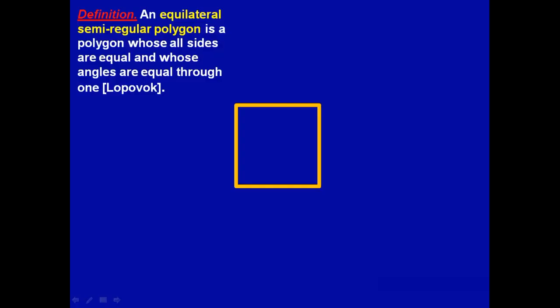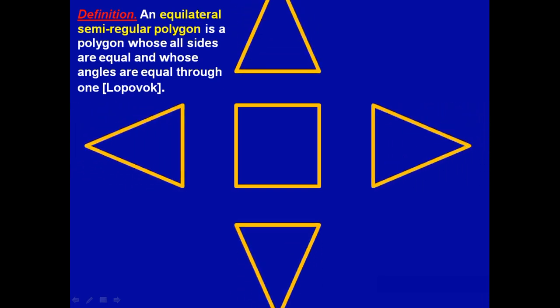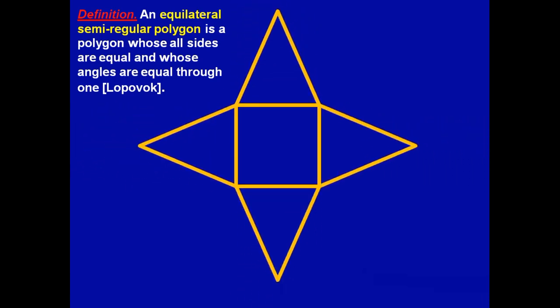During the work we used different geometric objects. Here are their definitions. First, an equilateral semi-regular polygon. Imagine that we have a square and add isosceles triangles to each side. Then the polygon will have equal sides and its angles will be equal through one.